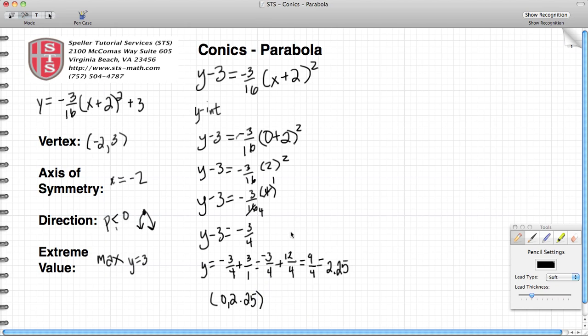Now I'm going to continue on to find my x-intercepts. To find my x-intercepts, I'm going to substitute in a value of 0 for y and then solve for x. Again, going back to the equation here, which is in near standard form: 0 minus 3 is equal to negative 3 sixteenths times the quantity (x plus 2) squared.